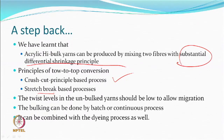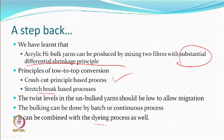We discussed toe-to-top conversion with two basic principles: crush cut and stretch break. The twist levels in the unbulked yarn should be low to allow migration of fibres, because the shrinkable component is supposed to migrate towards the core, and the non-shrinkable component comes out and is mainly responsible for bulk generation. Bulking can be done by batch or continuous process using steaming or dry heat, and it is possible to combine bulking with dyeing — simultaneous dyeing and bulking.